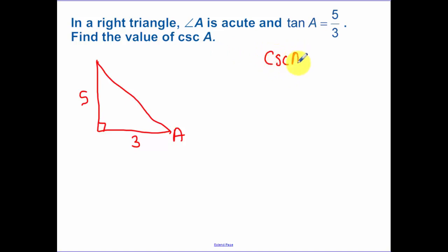Remember, cosecant is the reciprocal of sine, so that is hypotenuse over opposite. So I need to solve for this hypotenuse. Solving for that hypotenuse, we get 5 squared plus 3 squared equals our hypotenuse, which is C squared. 25 plus 9.